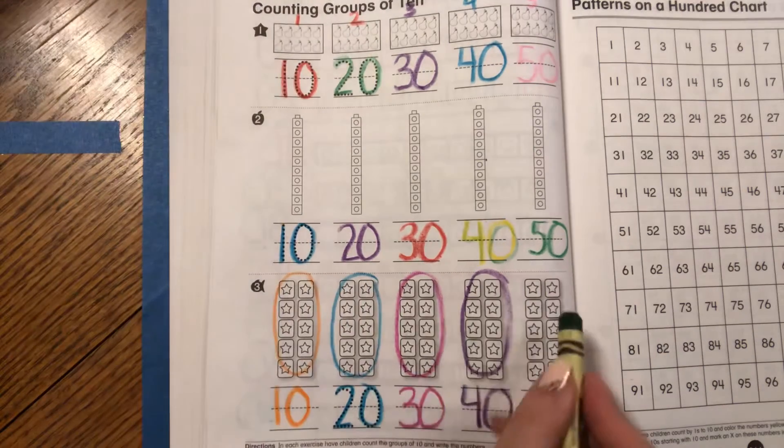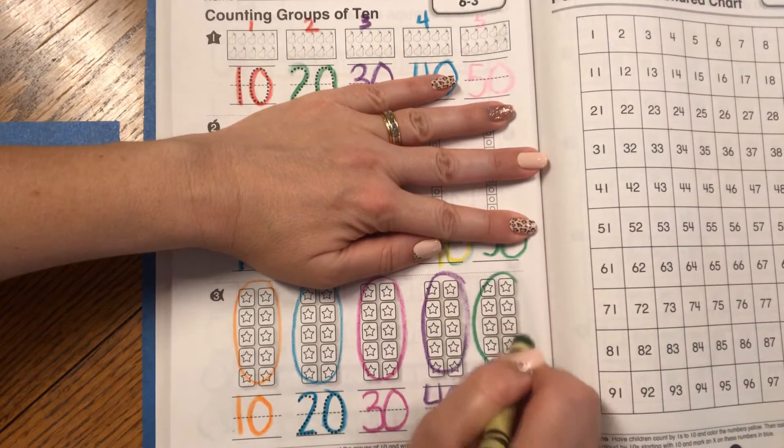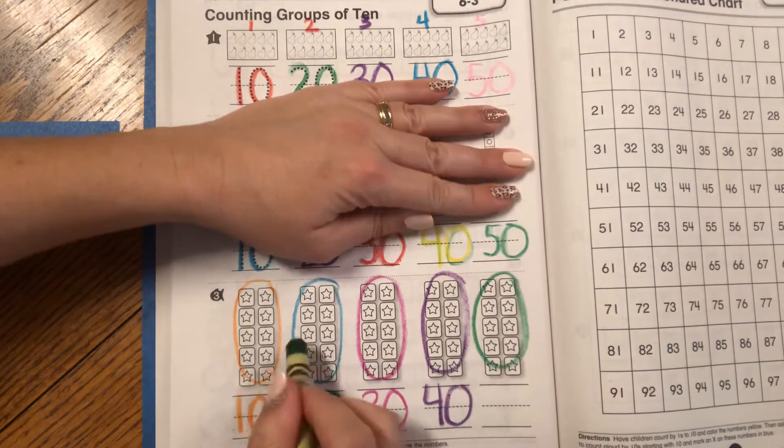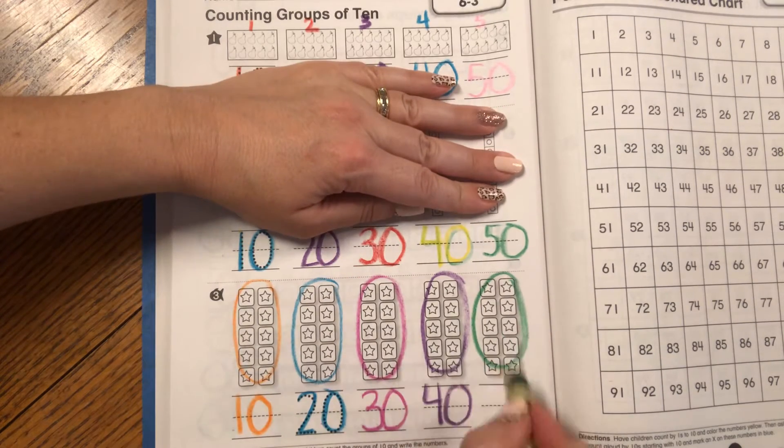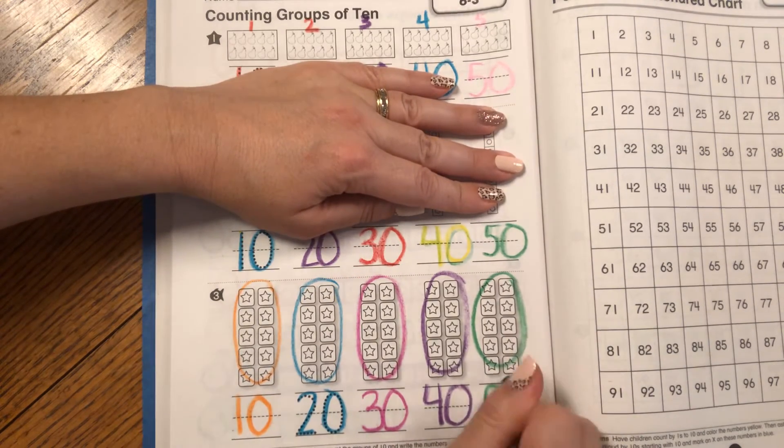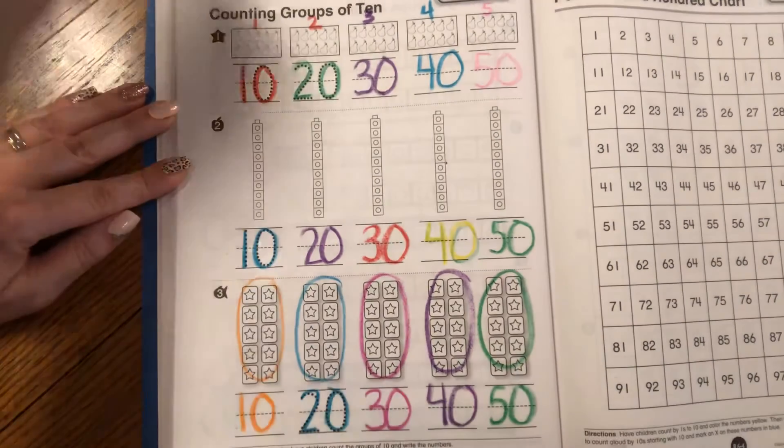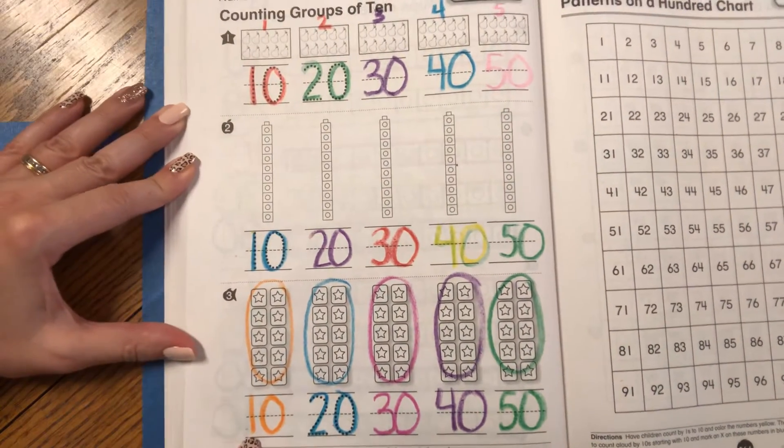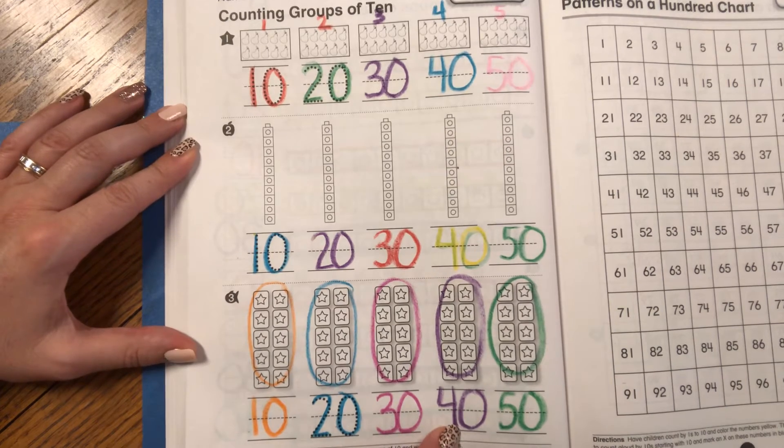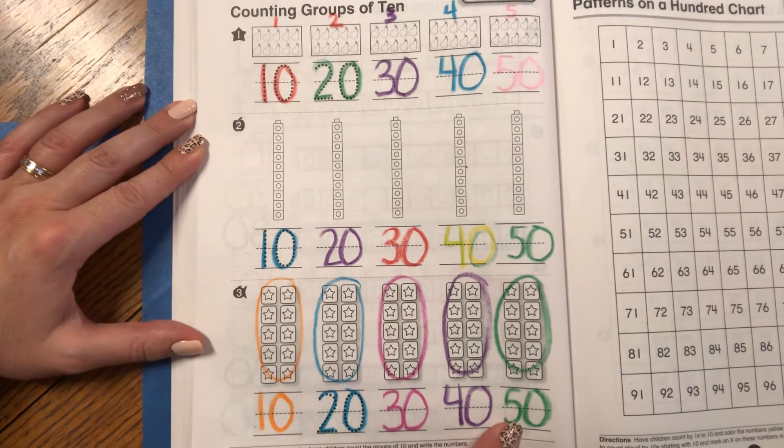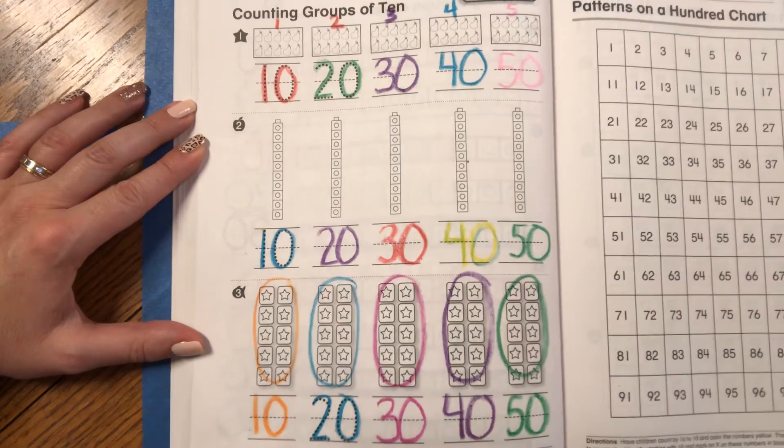And here's another group of 10. Circle it. One, two, three, four, five. Five 10s. That's 50. Let's count. 10, 20, 30, 40, 50. Yay! You are counting by 10s.